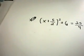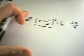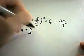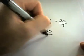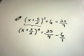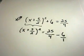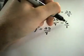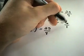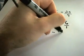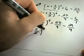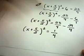Now you want to get the stuff in the parentheses by itself on one side of the equation. Subtract 6 from both sides, leaving (x + 5/2) squared equals 25/4 minus 6. Writing 6 as 6/1, we need common denominators to subtract, so multiply top and bottom by 4 to get 24/4. That gives us (x + 5/2) squared equals 1/4, since 25 minus 24 is 1.